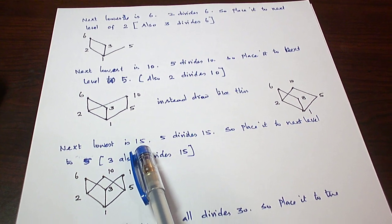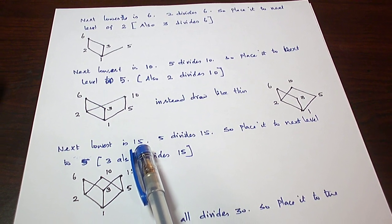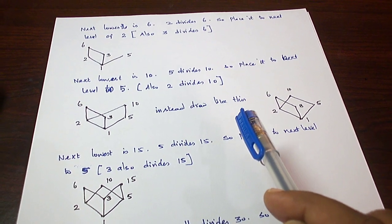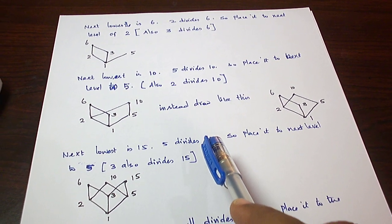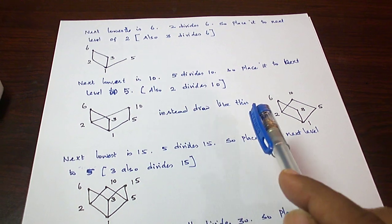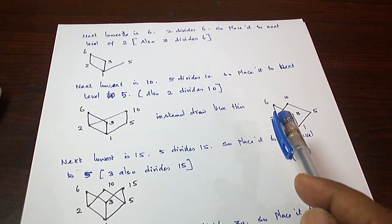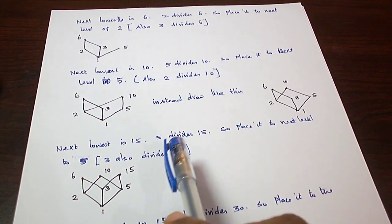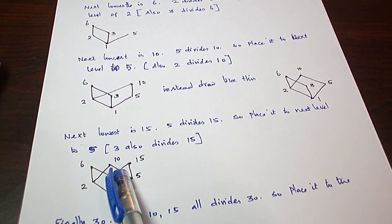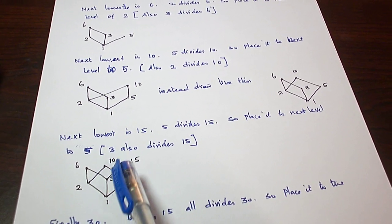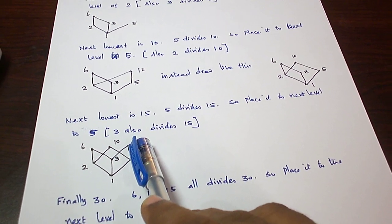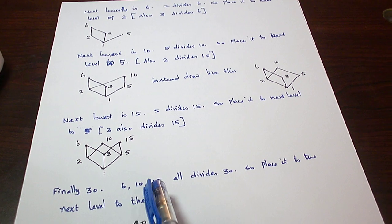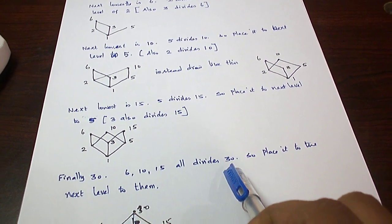And next, 15 is the next least element. 6 does not divide 15, 10 also does not divide 15. So in the same level as 6 and 10, 15 has to be placed. And we know that 5 divides 15 and 3 also divides 15. So 3 divides 15, 5 divides 15, we show the relationship.